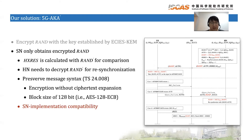The SN only obtains the encrypted RAND. In 5G-AKA prime, XRES is calculated with RAND prime for comparison, and the HN also needs to decrypt RAND prime for resynchronization. To preserve the message syntax defined by 3GPP, we employ an encryption scheme without ciphertext expansion and with a block size of 128 bits, that is AES-128 in ECB mode, which provides SN implementation compatibility.